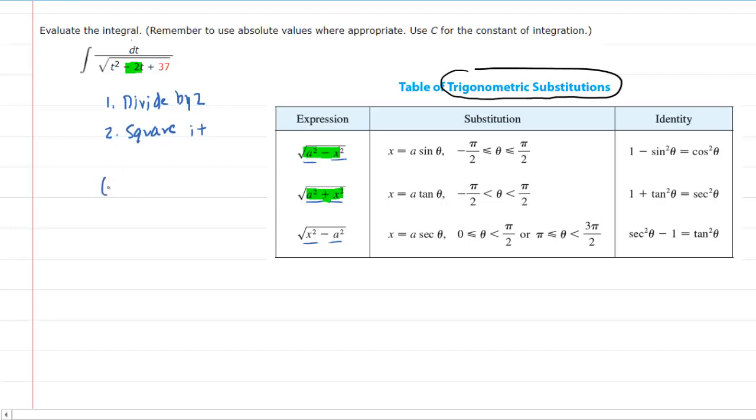For example, if we take negative two, which is the coefficient of our variable, and we divide that by two and then square it, we would end up with negative one squared, which of course is positive one. So what you'll do is come underneath this square root, and you're going to be using this little magic number that we just obtained.